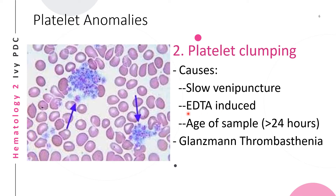Another cause of platelet clumping may be induced by the anticoagulant EDTA, or it may be caused if the sample is old or aged — a sample of more than 24 hours may cause platelet clumping. A pathologic cause for platelet clumping may be Glanzmann's thrombasthenia, which will be discussed later.